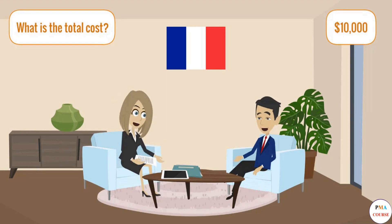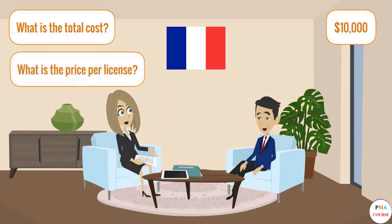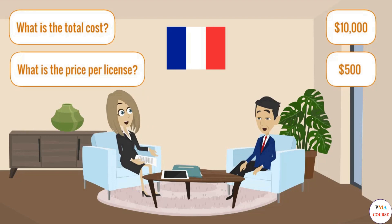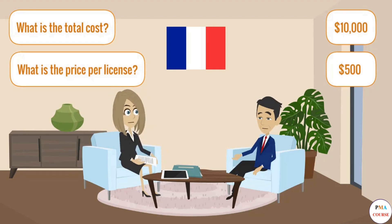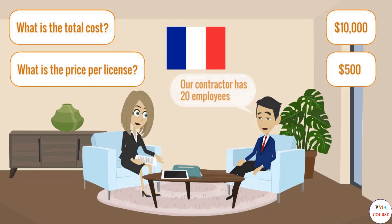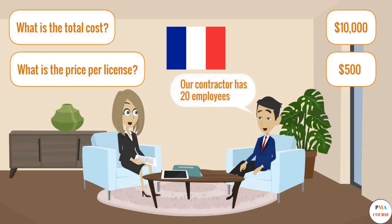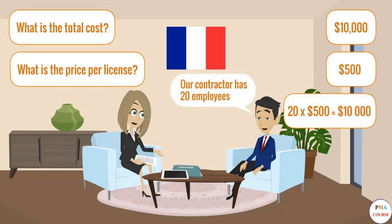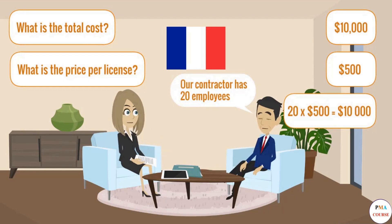'What is the price per license?' Frank answers: 'It's five hundred dollars.' That is the same price as in Japan, so why is the total cost so different? Frank says: 'Well, our contractor has 20 employees — the cost will be 20 times five hundred dollars, which equals ten thousand dollars.'